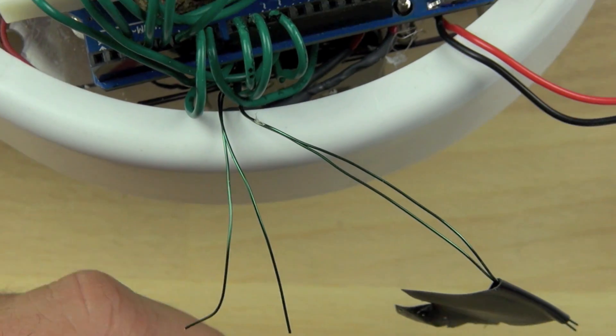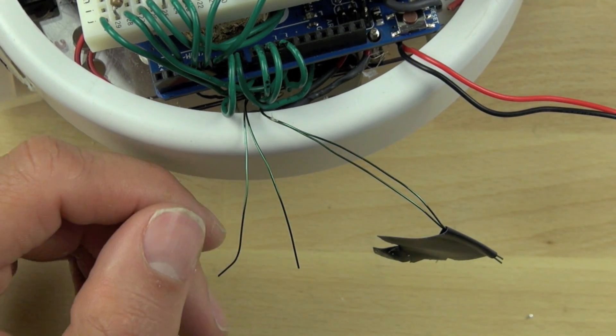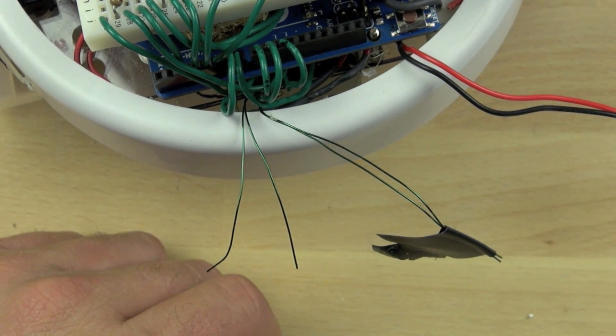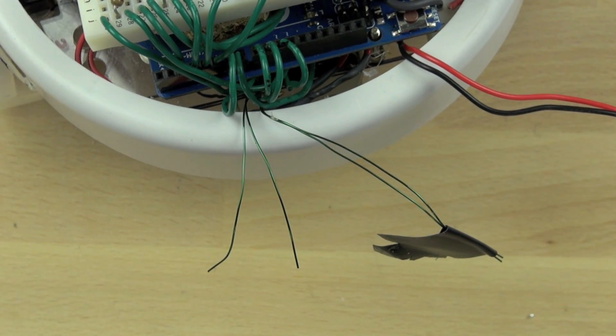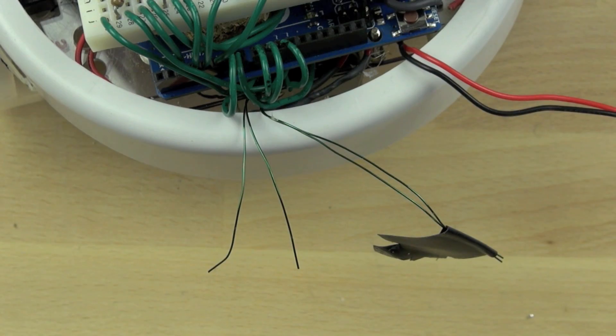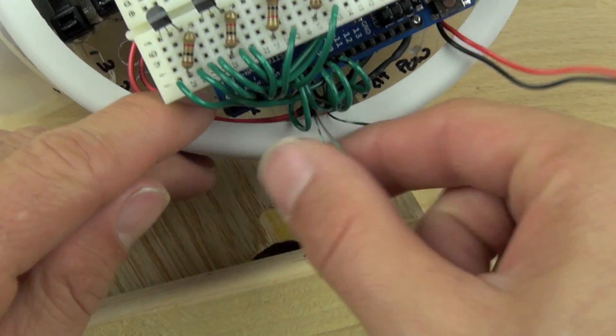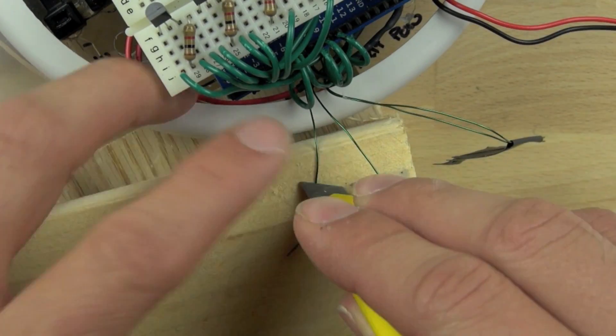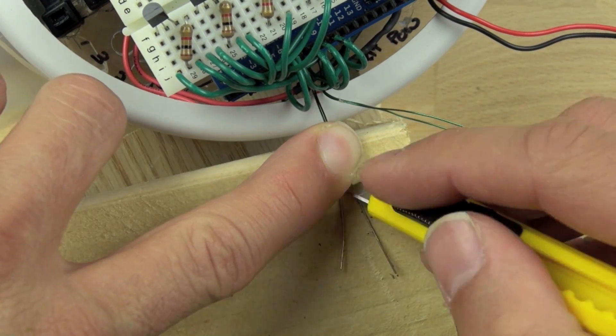We have our magnet wire that we connected to the actual contacts for the buttons that turn on and off the camera. We're going to strip away the lacquer coating on the outside of that wire using the edge of our break off blade knife.